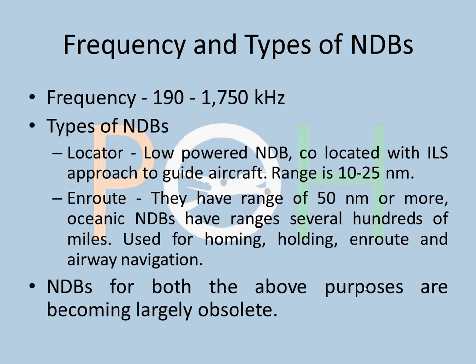Frequency and types of NDBs: the frequency range is 190–1750 kHz, but most NDBs are used between 250 to 450 kHz. There are two types of NDBs: locator and enroute. Locator NDBs are low-powered, co-located with the ILS approach to guide the aircraft under the localizer, with a range of about 10 to 25 miles. Enroute NDBs have a range of 50 nautical miles or more, and oceanic NDBs have a range of several hundreds of miles. They are used for homing, holding, enroute and airway navigation.